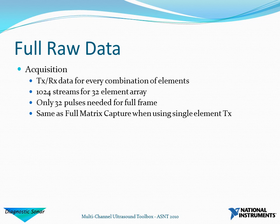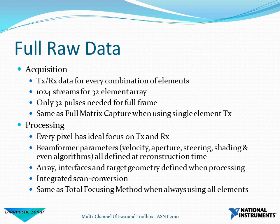On the acquisition side, we have a transmit-receive data set for every combination of element locations. For a 32-element array we've got 1024 RF data streams. However, if you've got full 32-channel receive parallelism, then you only need 32 pulses to acquire a complete frame of data. We can fire either a single element or a small group of elements to steer the energy in a preferential direction, and when using a single element this is where full raw data is equivalent to full matrix capture. On the processing side, one of the benefits is that every pixel has the ideal focus on transmit and receive — so this is equivalent to dynamic transmit-receive focusing.